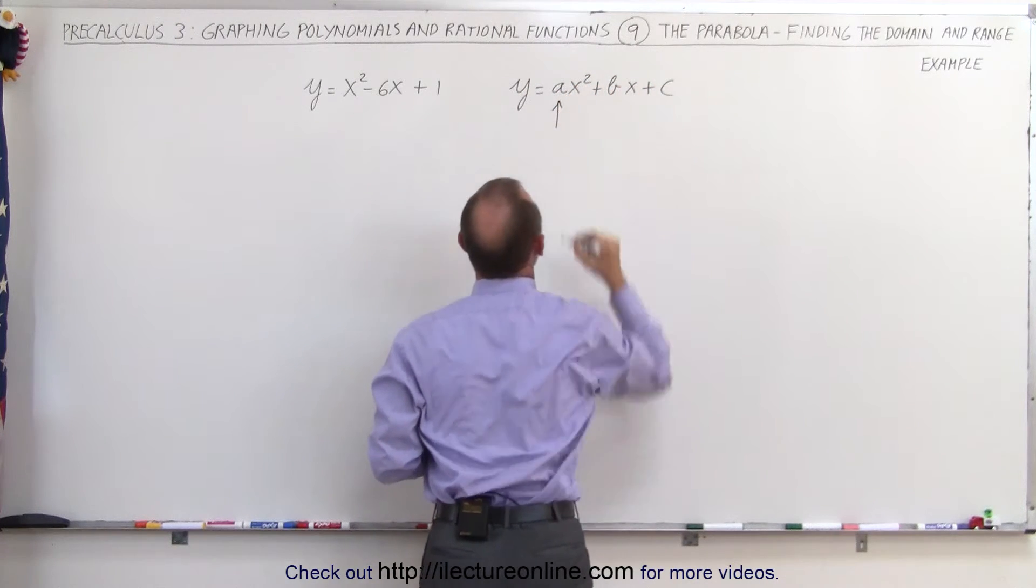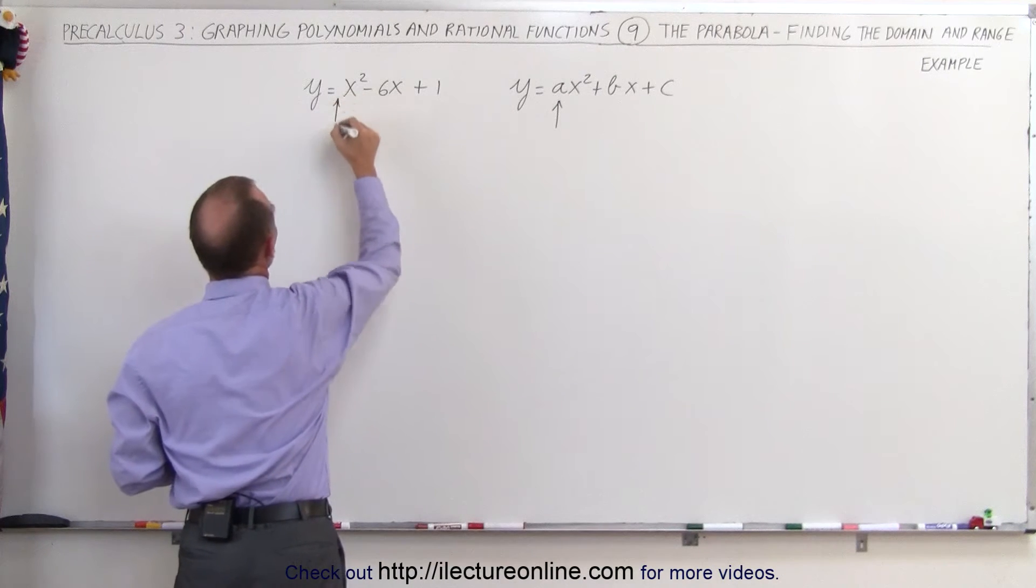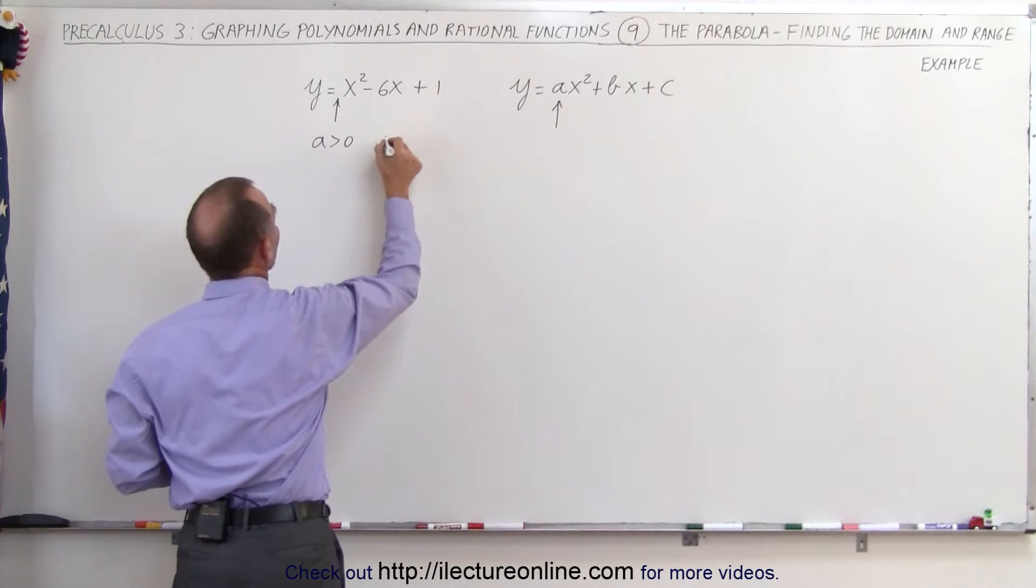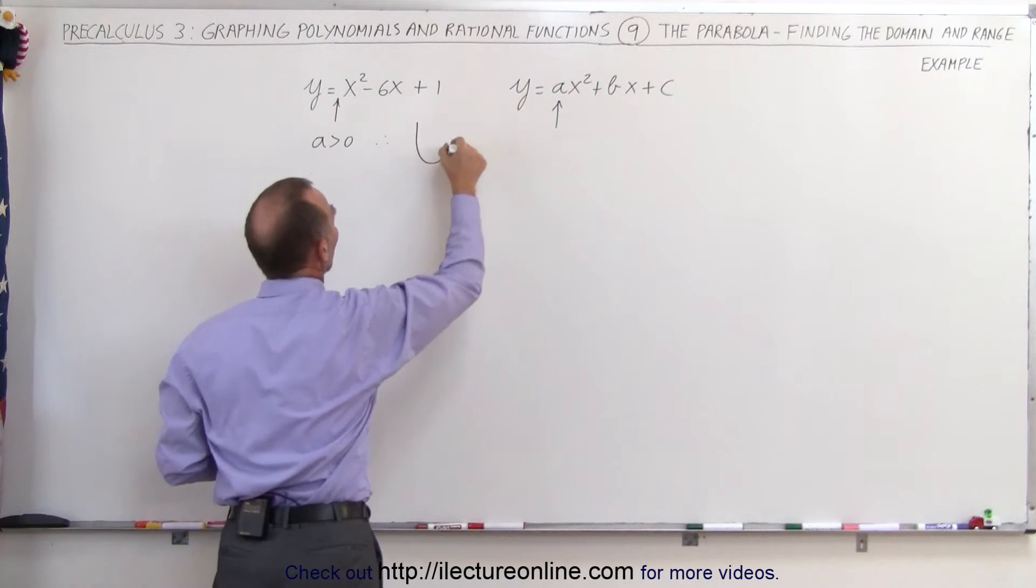Let's look at the coefficient of the first term. The coefficient here is 1, so a > 0, and therefore the parabola will be opening upward.